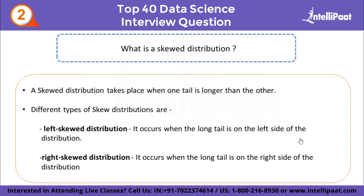What is a skewed distribution? A skewed distribution takes place when one tail is longer than the other. Skewness defines the asymmetry of a distribution where the data is not distributed equally on both sides of the distribution's peak. There are different types: left skewed distribution and right skewed distribution. In left skewed distribution, it occurs when the long tail is on the left side, and the median is less than the mode. Left skewed distribution is also known as negatively skewed distribution.